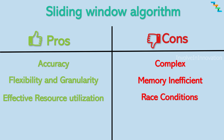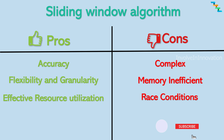In distributed systems, race conditions may arise when updating request counts within the sliding time window concurrently. Synchronization mechanisms are needed to ensure data consistency and prevent race conditions. We also need to use high-performance data sources like Redis and a centralized data store.